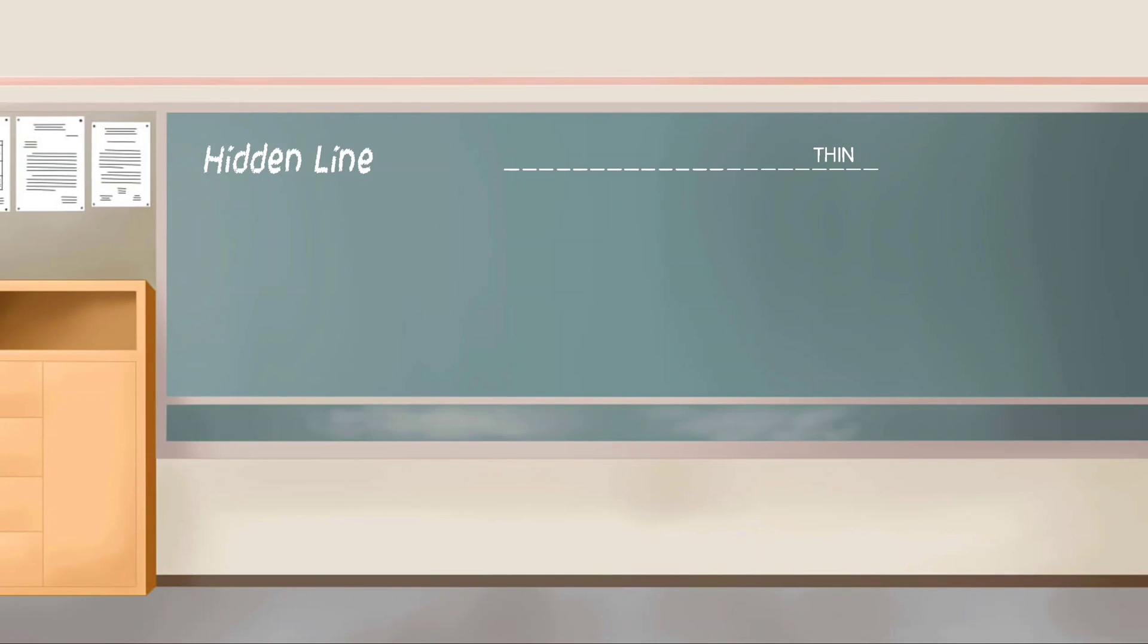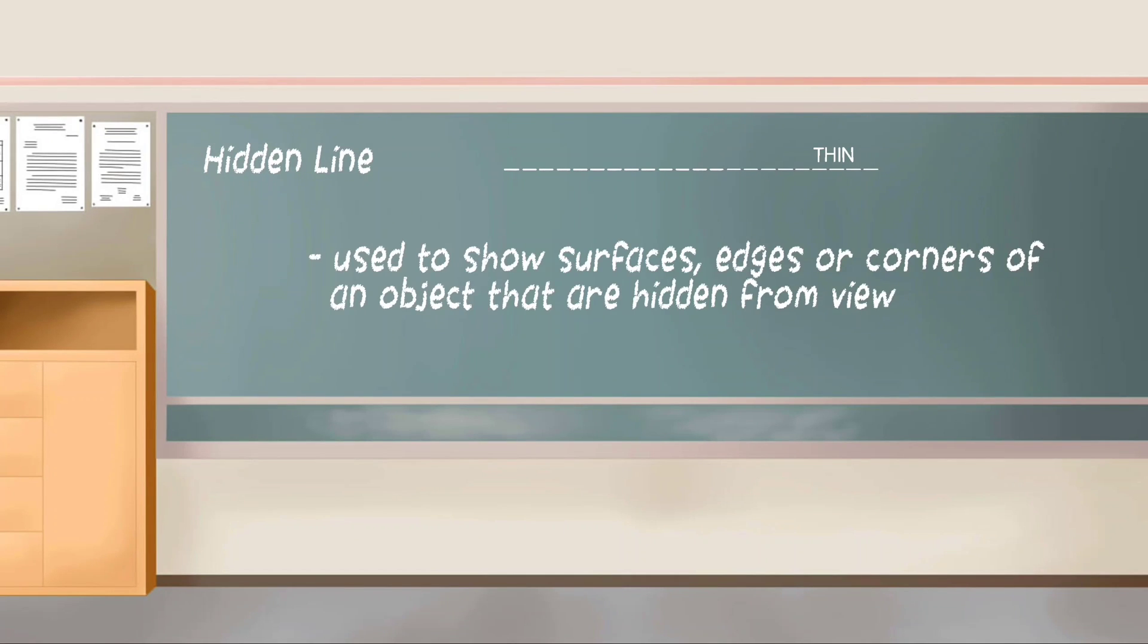Hidden line. It is a thin line used to show surfaces, edges, or corners of an object that are hidden from view.